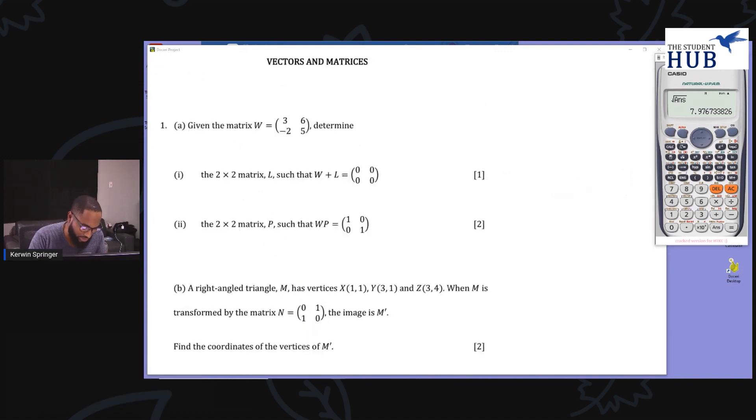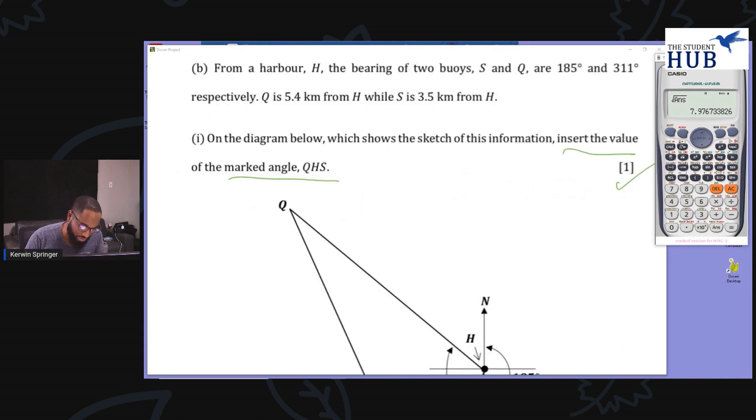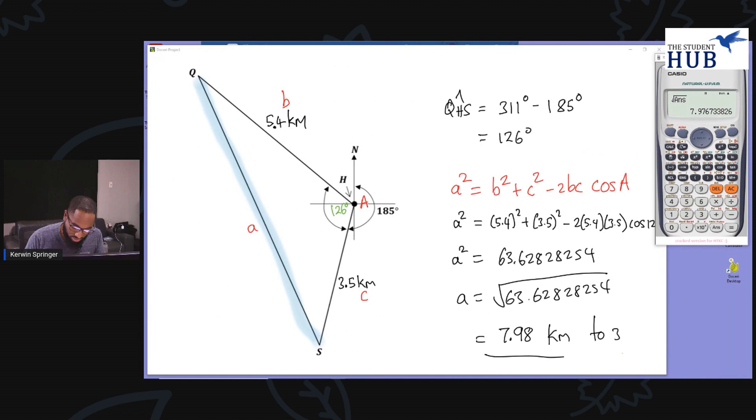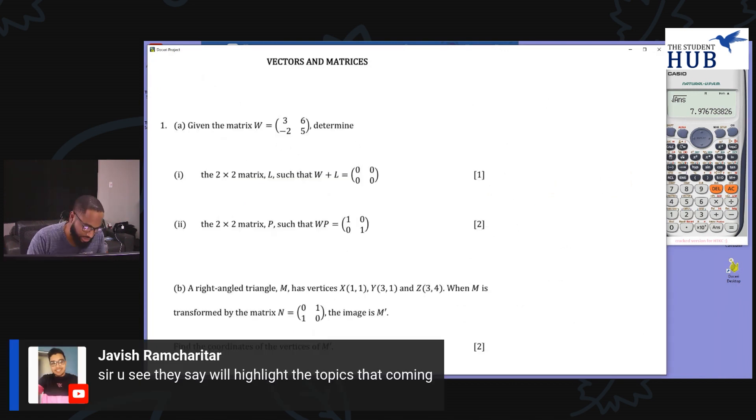When you get your answer, check back the question and look if decimal places was required or anything like that. The distance between the two buoys, we can just give that to three significant figures. There's a rule in experimenting that you're not allowed to be more significant than the values you started with. So 7.98 kilometers to three significant figures is good enough.